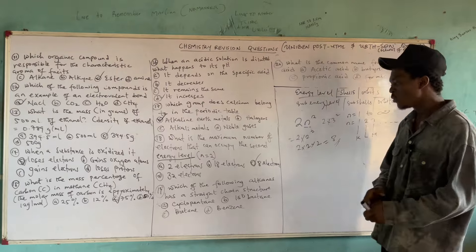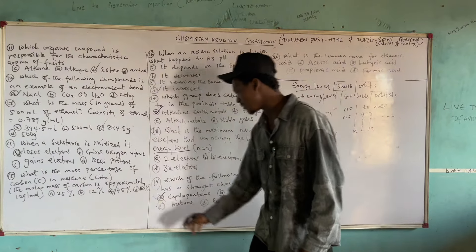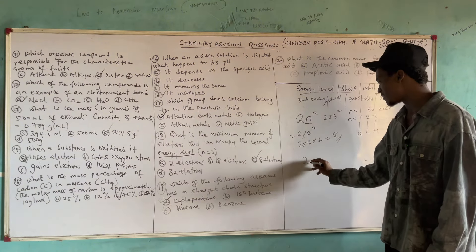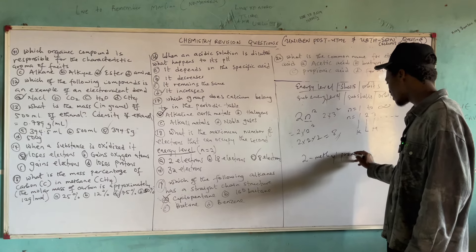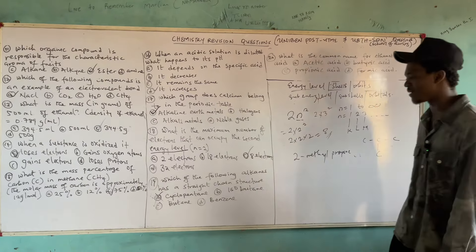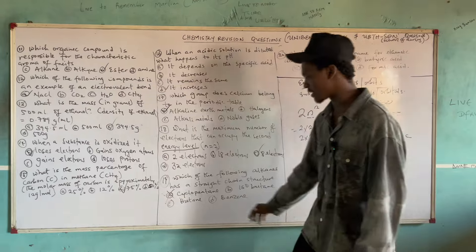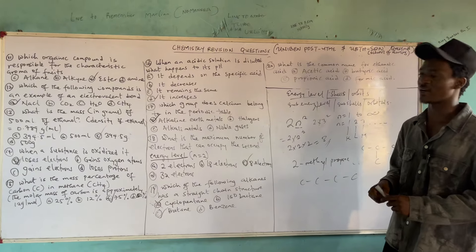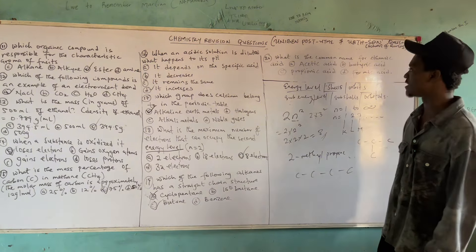Question 19: Which of the following alkanes has a straight chain structure? One option is a cyclic chain (wrong). Another is isobutane (2-methylpropane), which has a branch — making it a branched chain. Butane is an ordinary straight chain with carbons linked linearly. Benzene is not even a member of the alkanes; it is aromatic. Alkanes and alkenes are under aliphatic (open chain hydrocarbons). So the correct answer is option C — butane.